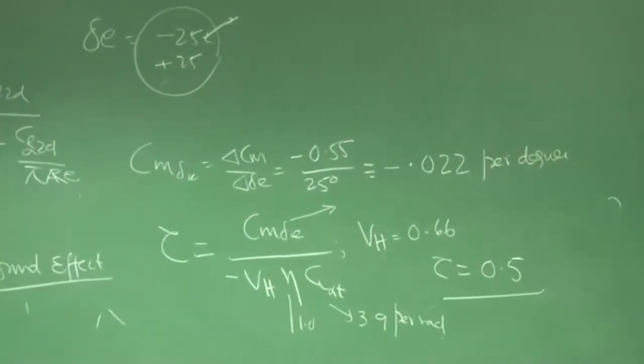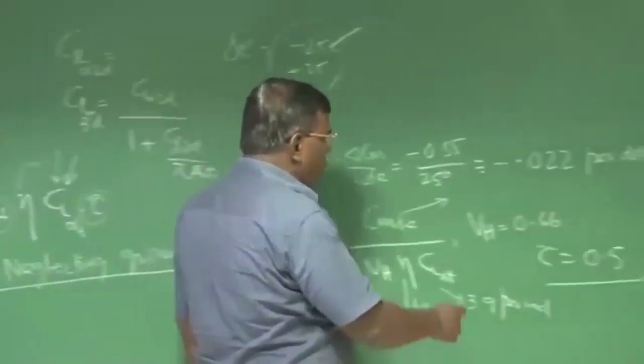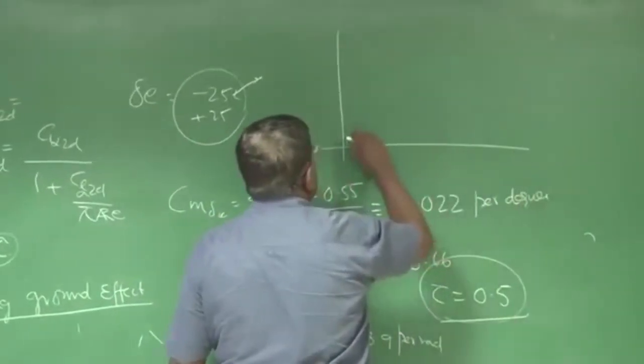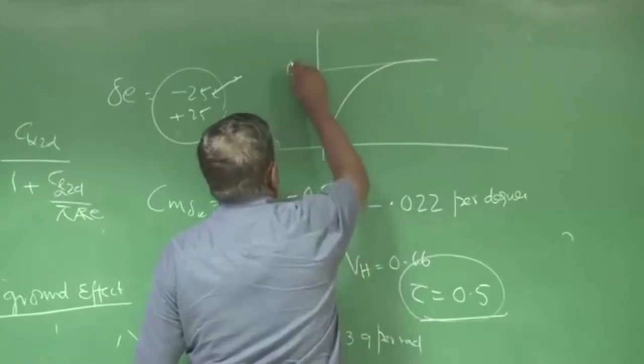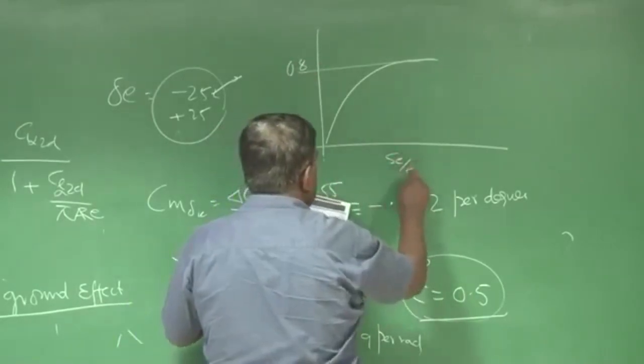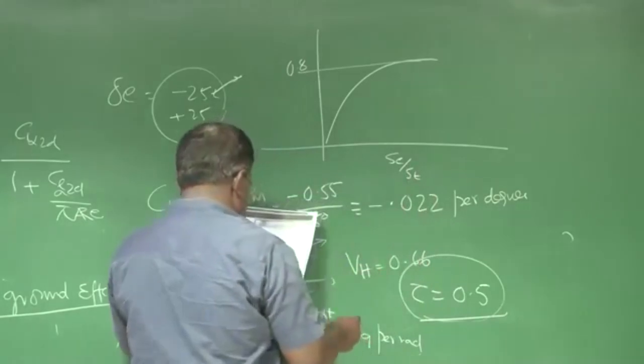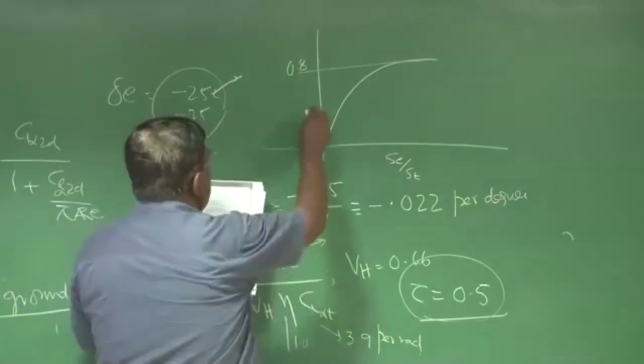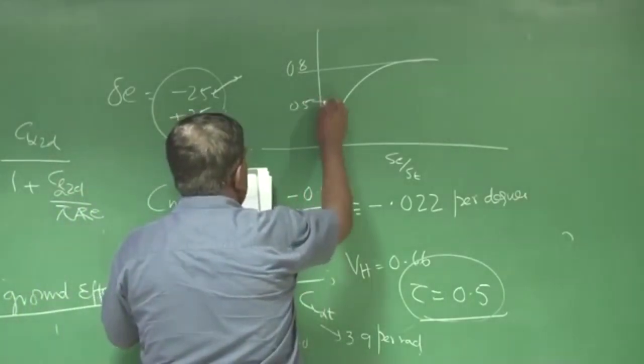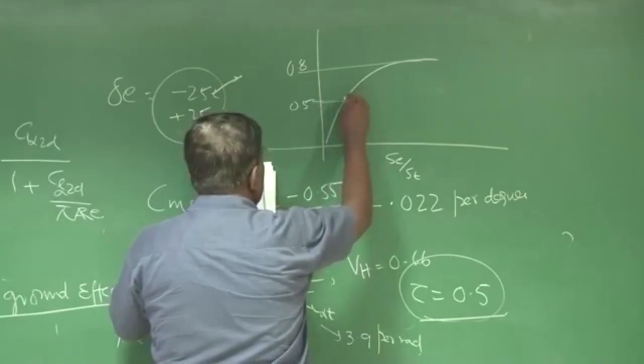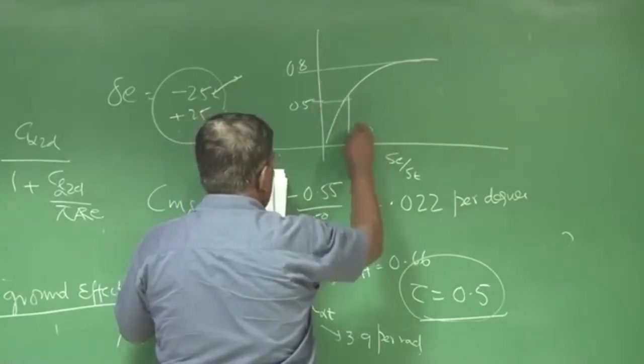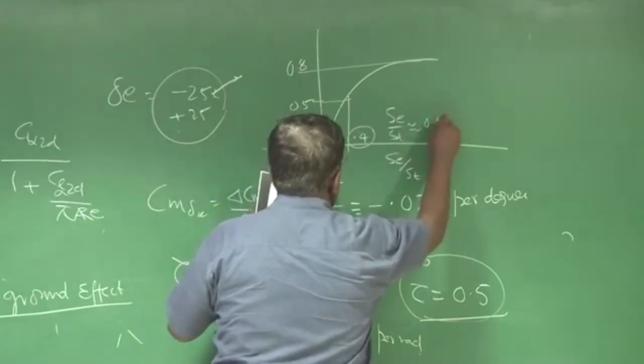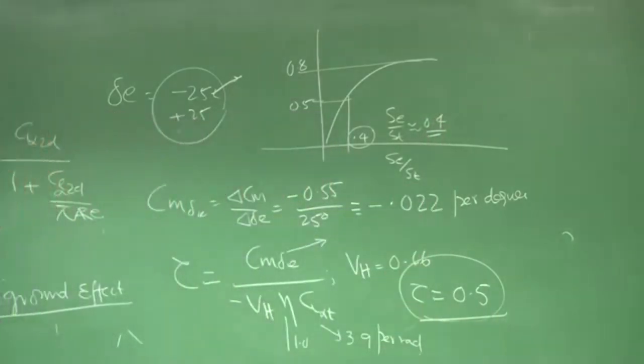So once we get tau now, once I get tau as 0.5, what I do I will cross-check. I come here again, see this chart which gives around 0.8 and this is SE by ST. I try to check how much this actually means for 0.5, tau is 0.5 somewhere here, and if you see that graph it will come down to again around 0.4, that is SE by ST will be approximately 0.4. So that again comes back to the understanding of 40 percent.